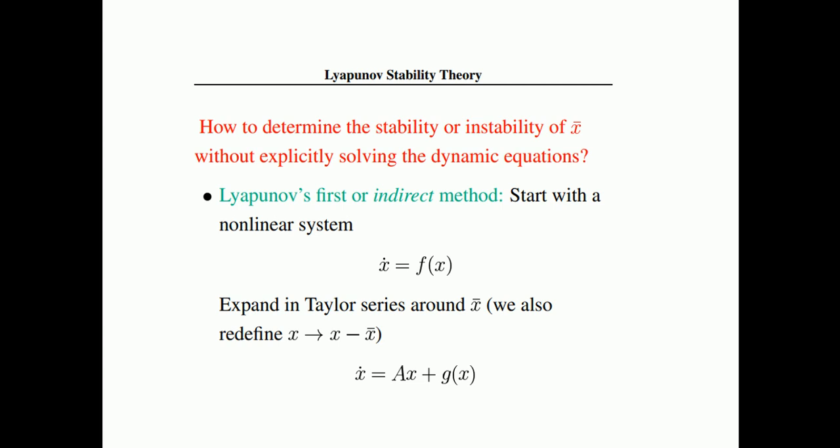The first method is to linearize a nonlinear system in some region. If you linearize a nonlinear system in some region, you apply the same method as for linear systems — you determine the eigenvalues or closed-loop poles. If these are negative the system will be stable; if it is zero you cannot say anything with confidence; and if it is positive the system will definitely be unstable. Start with the nonlinear system x-dot equals f of x and expand the Taylor series.